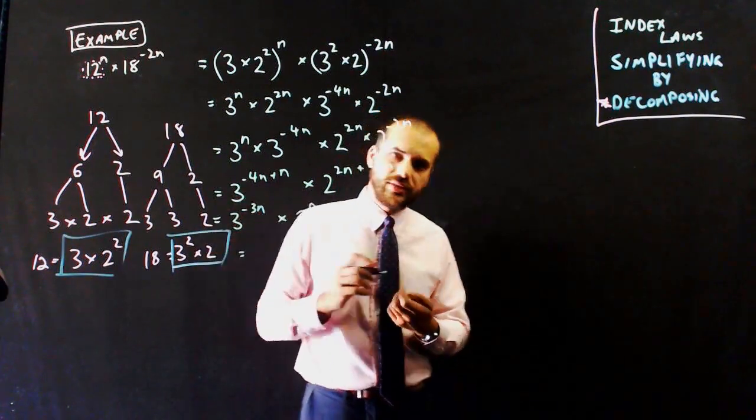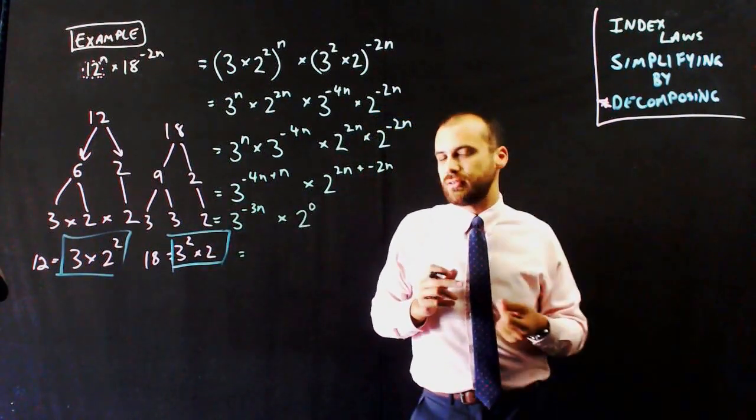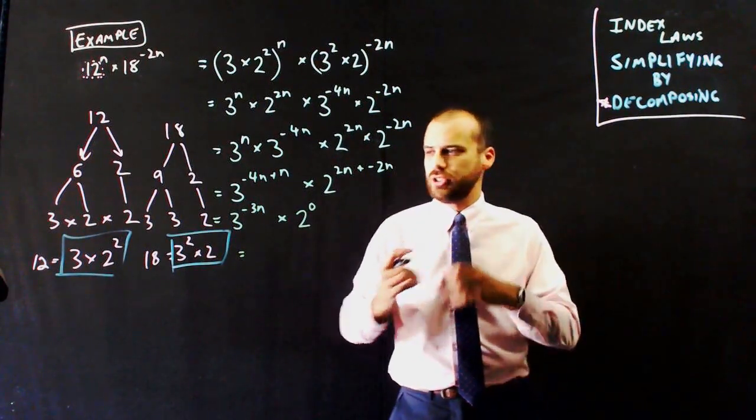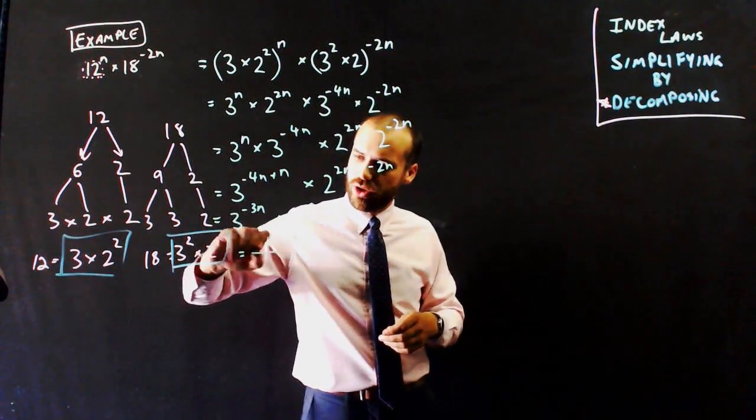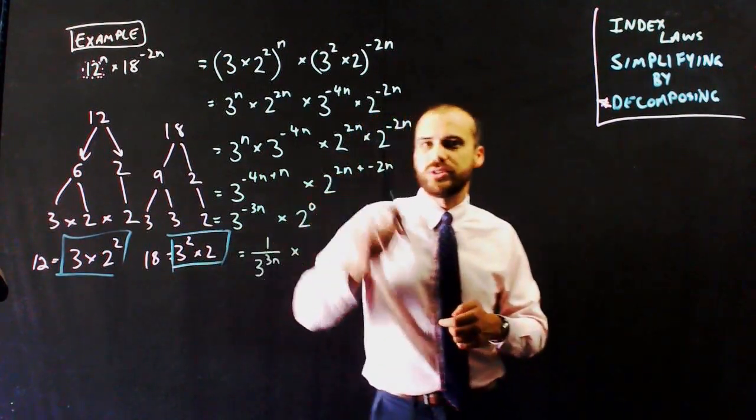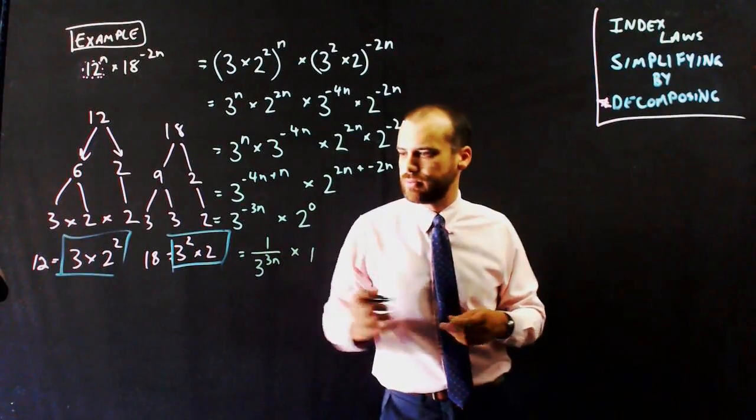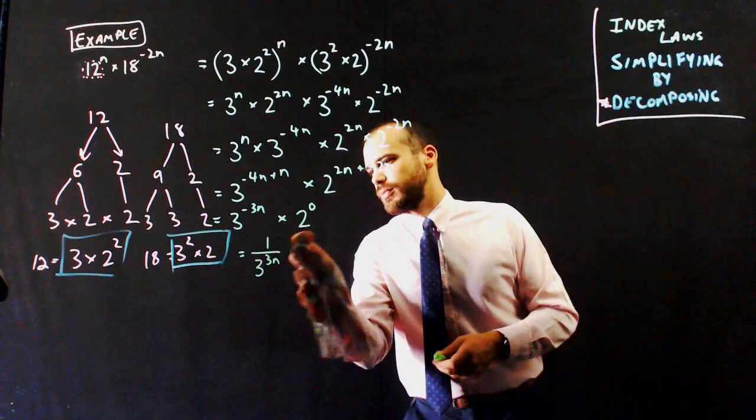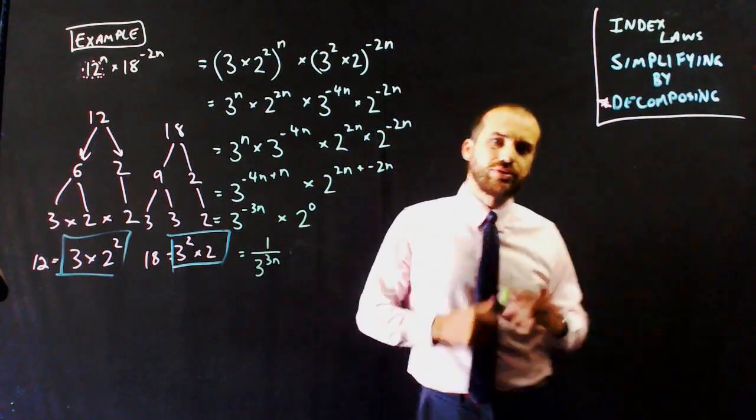That 3 to the negative 3n, if something has a negative power, it means it's on the bottom of a fraction, or it's on the wrong side of a fraction. So I can rewrite this as 1 over 3 to the 3n, and I'm multiplying it by 2 to the 0, and 2 to the 0 is 1.